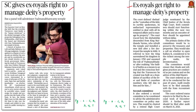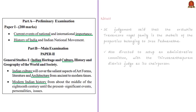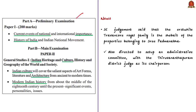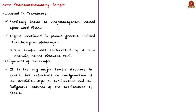The Supreme Court judgment said that the erstwhile Travancore royal family is the shebait or custodian of the properties belonging to Sri Padmanabha Swami Temple. The judgment also directed the setting up of an administrative committee with the Thiruvananthapuram District Judge as its chairperson. The temple is located at Travancore, locally known as Thiruvananthapuram, the capital city of Kerala. The syllabus relevant to this analysis is highlighted for your reference.